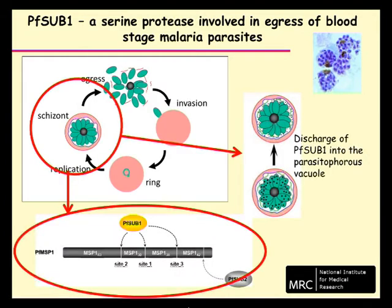We've known for some time that, just prior to egress, a parasite-derived serine protease called SUB1, or PF SUB1, is released from merozoites into the lumen of the parasitophorous vacuole, a membrane-bound compartment in which the parasite resides. Discharge of SUB1 enables it to proteolytically modify a number of parasitophorous vacuole proteins.